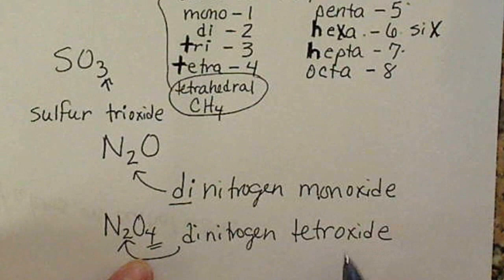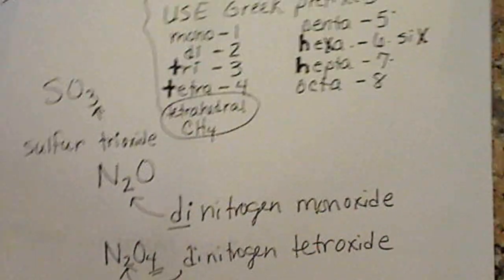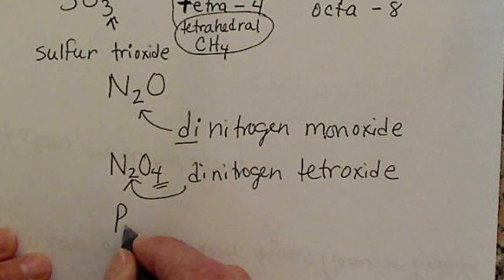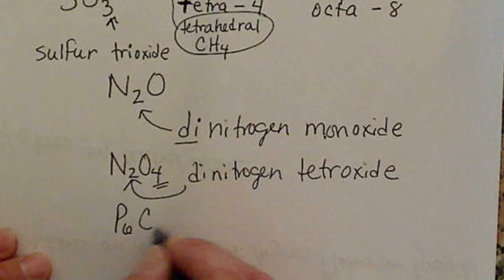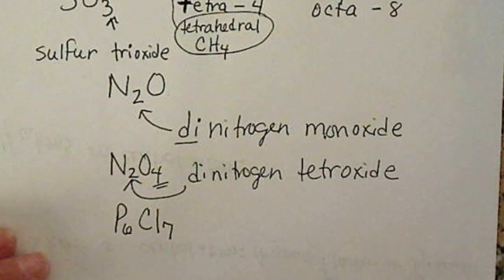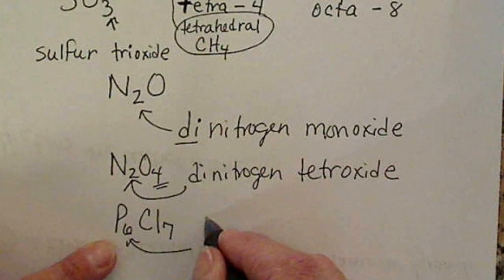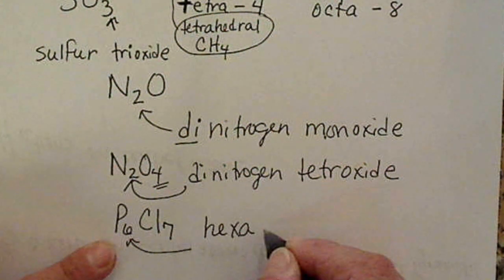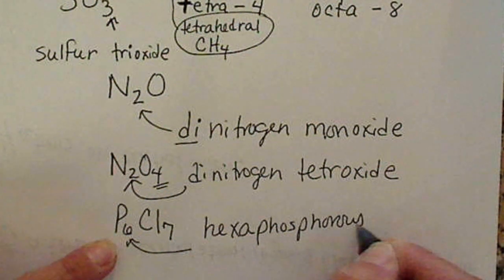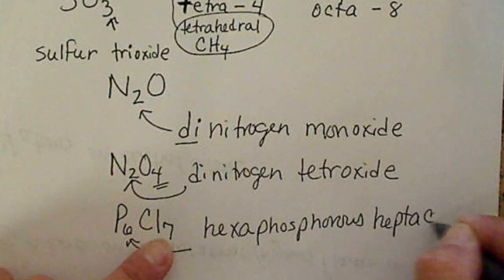Usually if there's an oxide, we don't have both vowels there. And there are some larger molecules, for example, like P6Cl7. But six of those would be hexaphosphorus. Seven would be heptachloride.